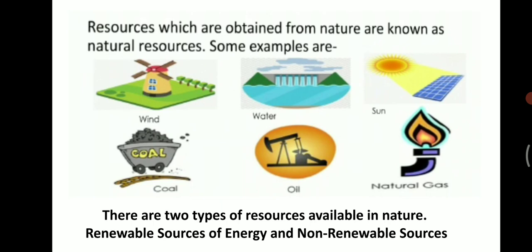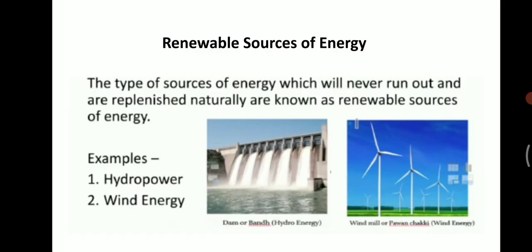There are two types of resources available in nature: renewable sources of energy and non-renewable sources of energy. The type of sources of energy which will never run out and are replenished naturally are known as renewable sources of energy. 'Replenished' means they are formed or produced naturally — we don't go and produce them. So these are the natural resources which are renewable.